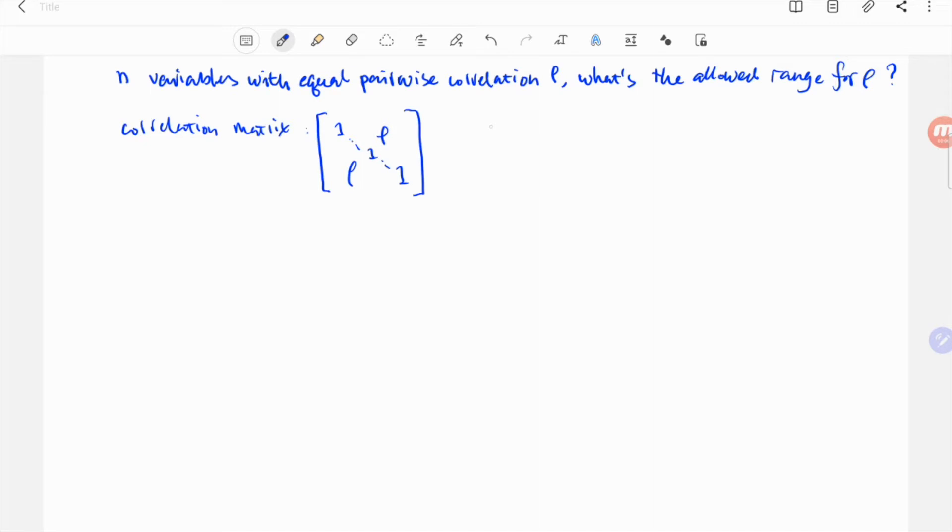Mathematically, it's actually pretty simple. If we write down the correlation matrix, it has diagonal elements 1 and the rest rho. Because the correlation matrix is positive semi-definite, its eigenvalues need to be non-negative.